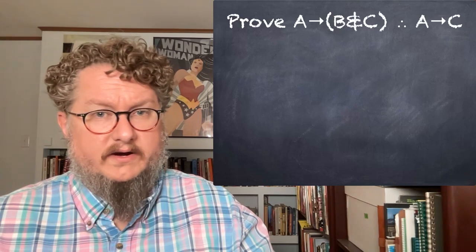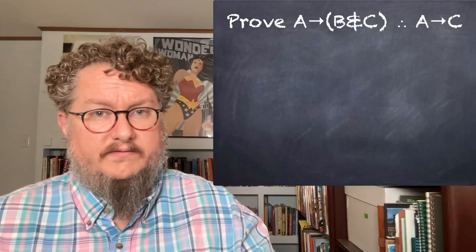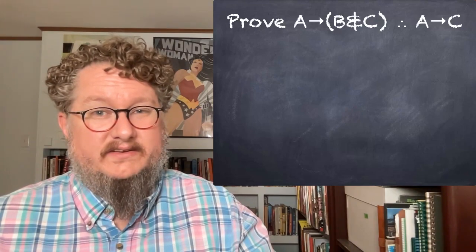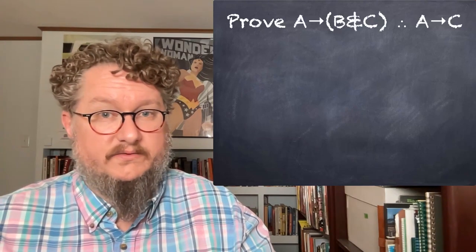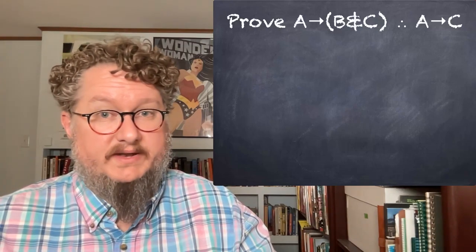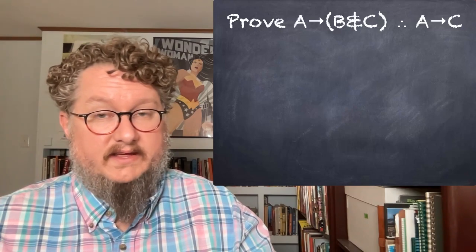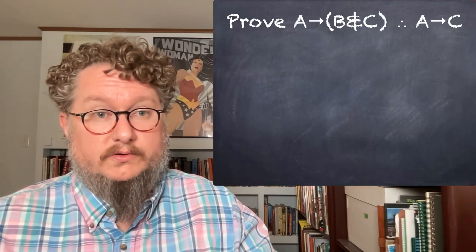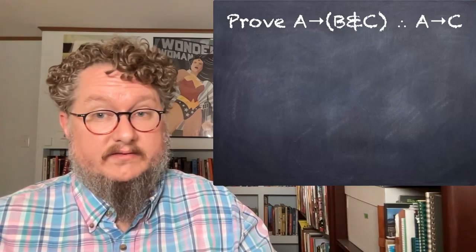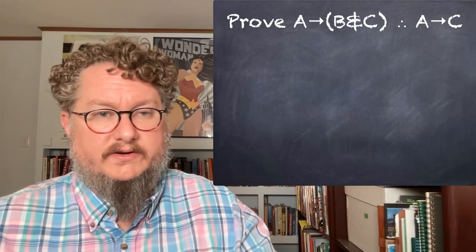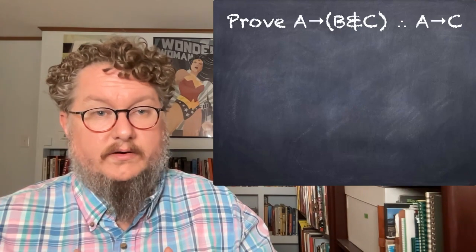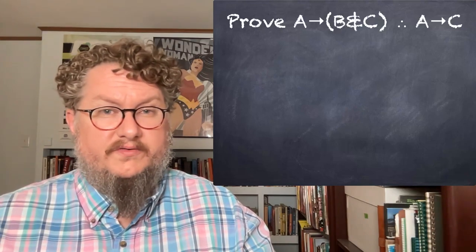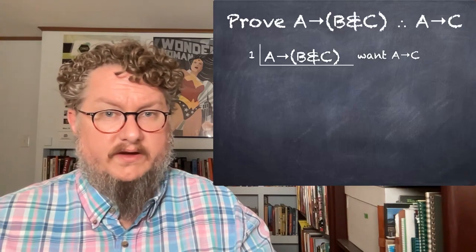So if we look at this argument and we want to prove if A then B and C, therefore if A then C, we might be tempted to use the conditional elimination rule here. We've got B and C. Let's just use conditional elimination to pull out that C and do that directly. But you can't do that. That won't work. The conjunction elimination rule only applies to whole sentences where the conjunction is the main connective. In general, all of the introduction elimination rules and all of the previous rules we've looked at only apply to the entire sentence and are focused on the main connective of that sentence. So to prove this, we'd have to go a different direction. We'd have to start with our premise.